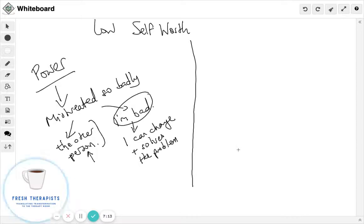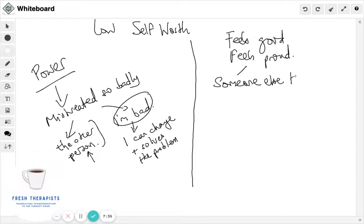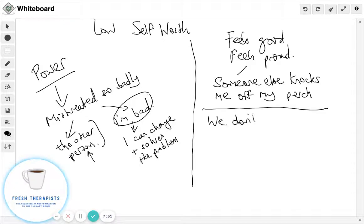Another just to brainstorm, it might be I'm going to keep hold of my low self-worth because if I'm the opposite of that, if I'm someone who feels good about myself, who feels proud of myself, then actually what's going to happen there is someone else is going to knock me off my perch and that's too painful. I've experienced that before and I don't want that.